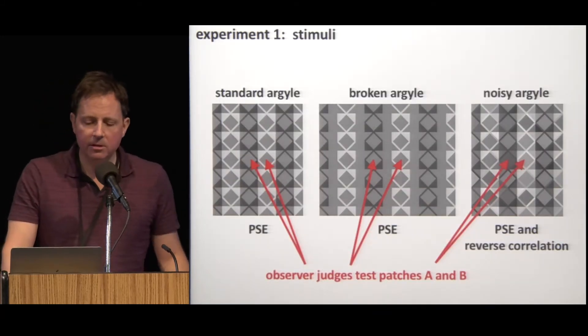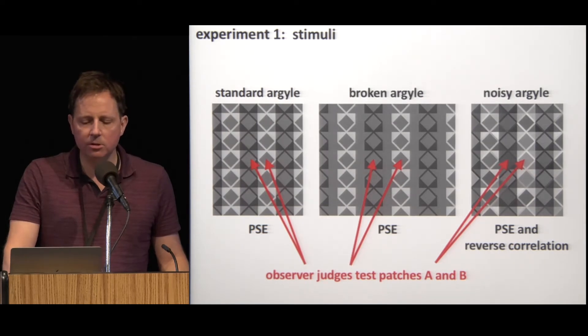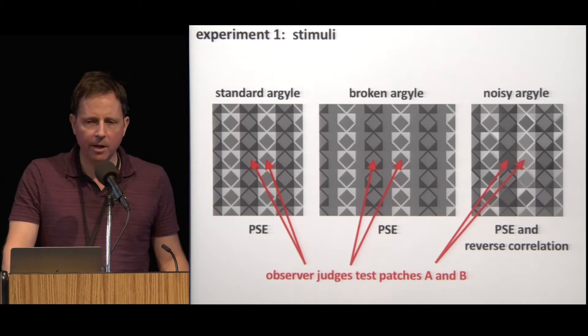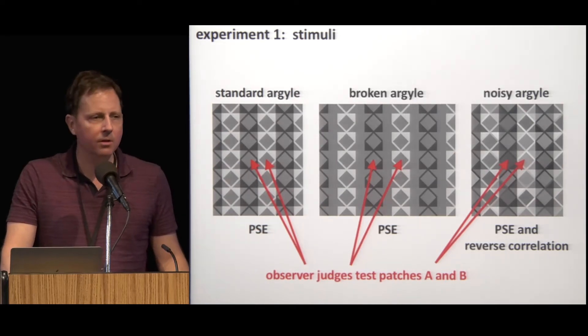That's what we did with these three stimuli. In the standard and broken argyle stimuli, we measured PSEs to gauge the strength of the illusion. And in what we call the noisy argyle, we added Gaussian noise to the luminance value of every image patch on every trial. We ran four human observers in 10,000 trials each. From this data, we measured the correlation between the luminance fluctuations at each image patch and the observer's responses.